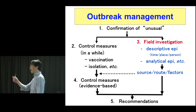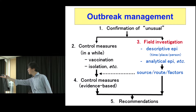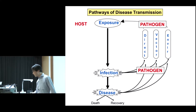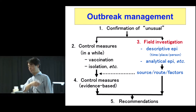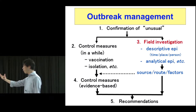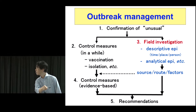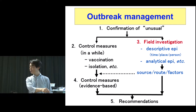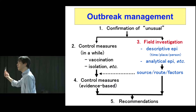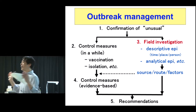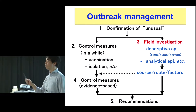Evidence-based control measures. After outbreak investigation, we have some concrete idea about what went wrong, what the transmission route is, and what the risk factors are. Then, based on this evidence and knowledge, we can move on to practical, timely, realistic control measures. After that, we develop recommendations in order to prevent the same kind of outbreaks in the future. That is the key component of outbreak management and any other public health programs.